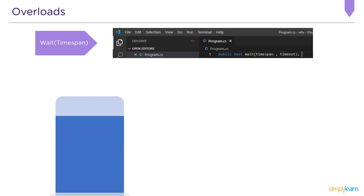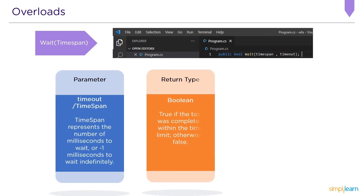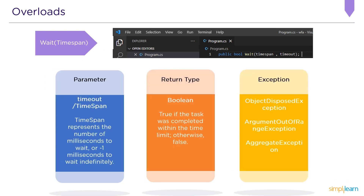As shown on my screen, we have the Wait(TimeSpan) overload. The parameter used is timeout, a TimeSpan representing the number of milliseconds to wait, or minus one milliseconds to wait indefinitely. The return type for Wait(TimeSpan) is boolean, which will be true if the task has completed within the time limit, otherwise false.